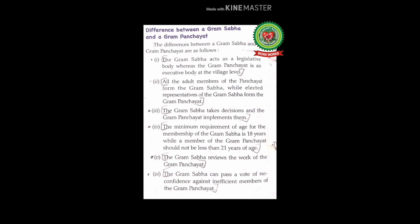The Gram Sabha acts as a legislative body and the Gram Panchayat acts as an executive body. Number four: the minimum age requirement for membership of the Gram Sabha is 18 years, while a member of the Gram Panchayat should not be less than 21 years of age. So members of the Gram Sabha must be at least 18 years old and members of the Gram Panchayat at least 21 years old. Number five: the Gram Sabha reviews the work of the Gram Panchayat.